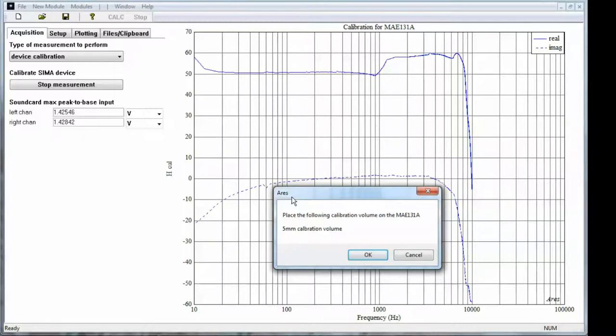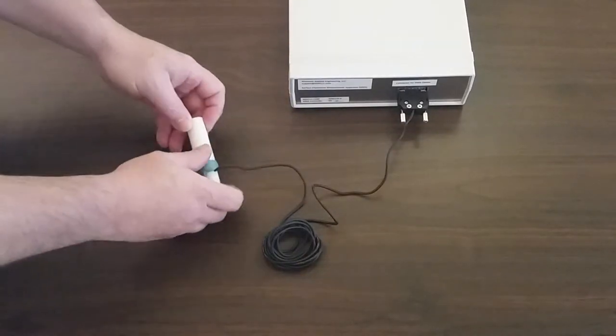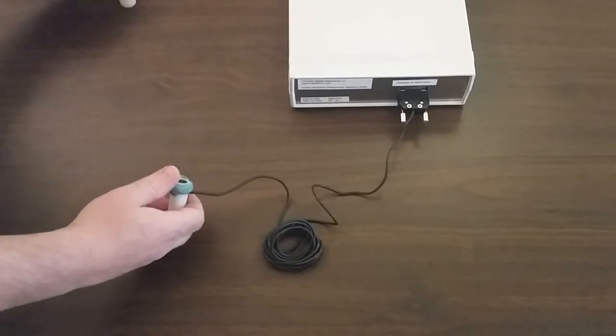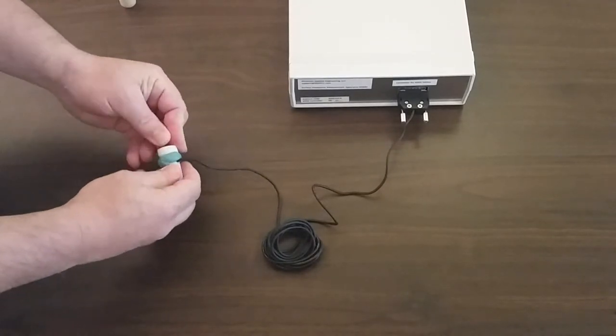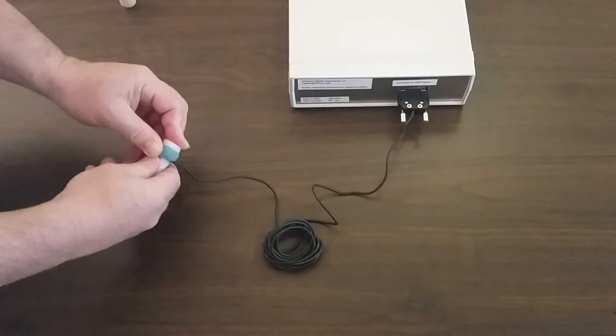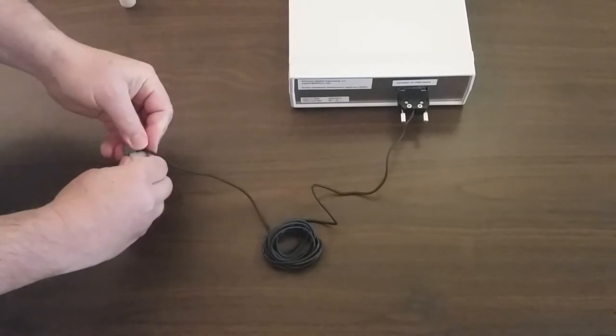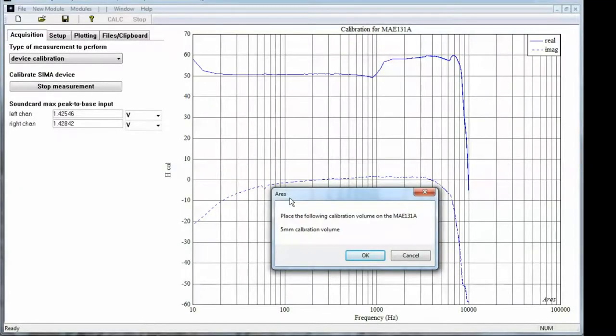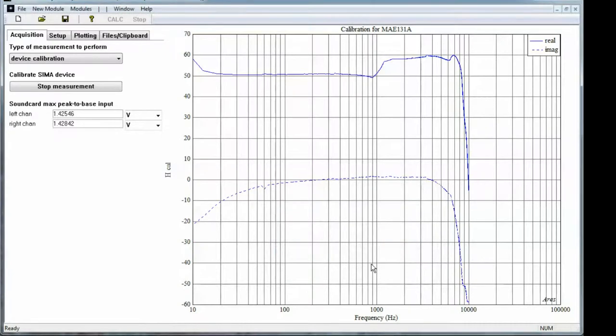OK, it's performed the 50mm calibration and it's now asking for the 5mm calibration volume. So we'll come back over and take the 50mm off and put the 5mm calibration volume on. Go back over to ARIES and press OK. You'll hear a higher frequency sweep as it does the 5mm calibration.